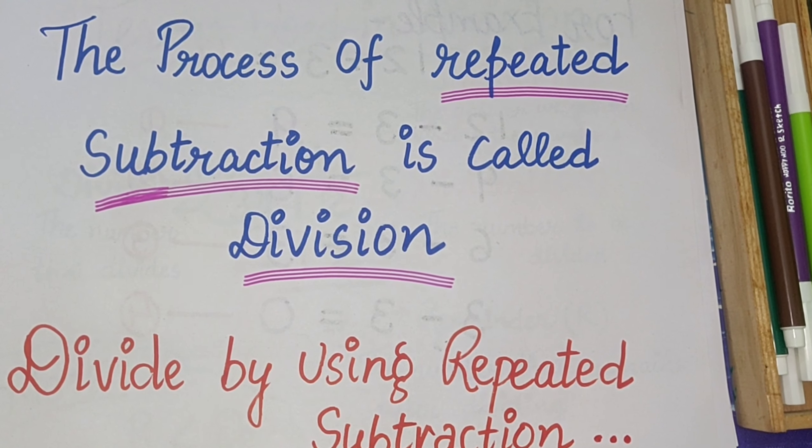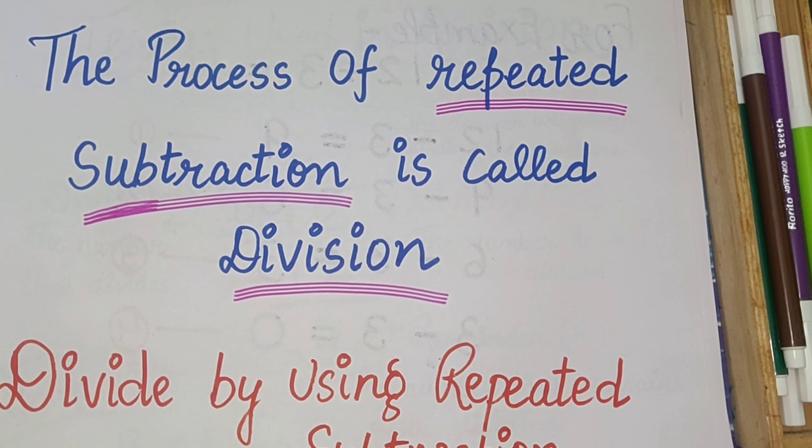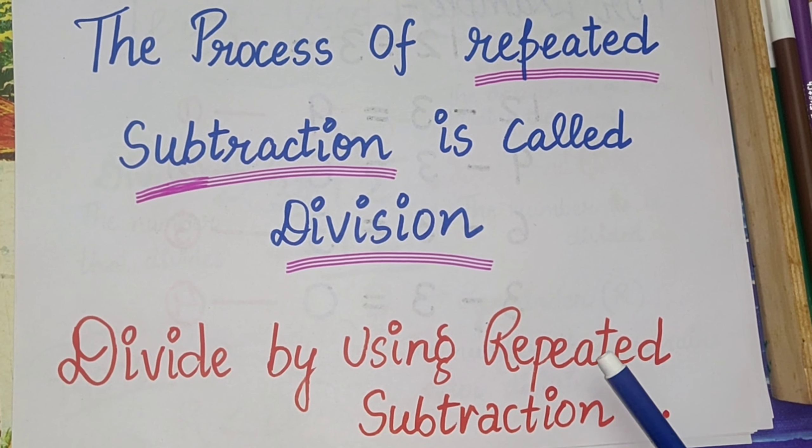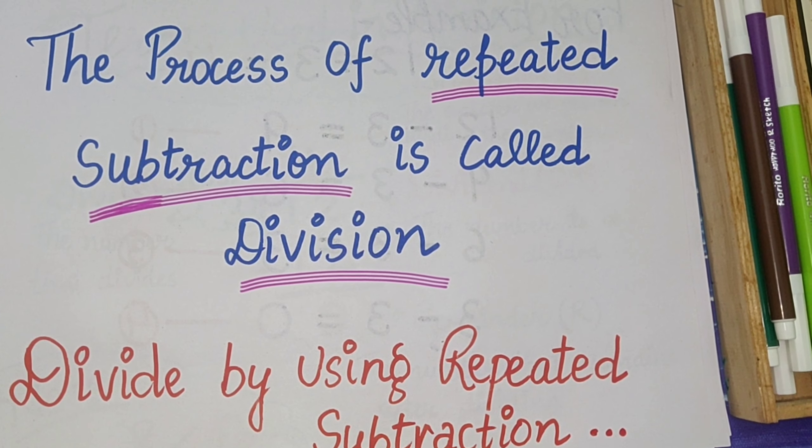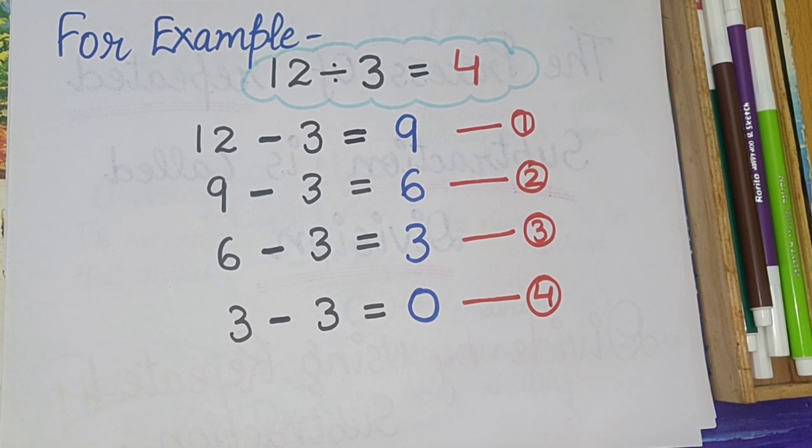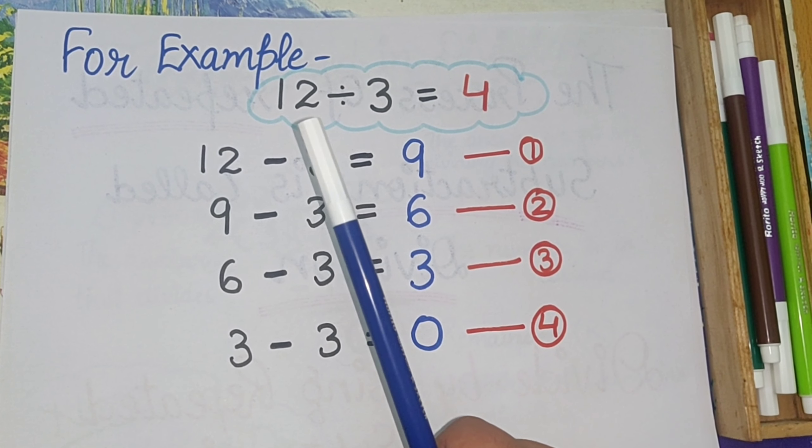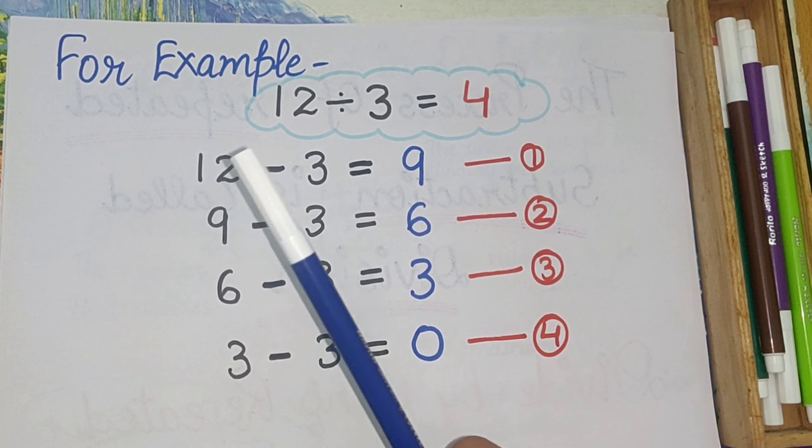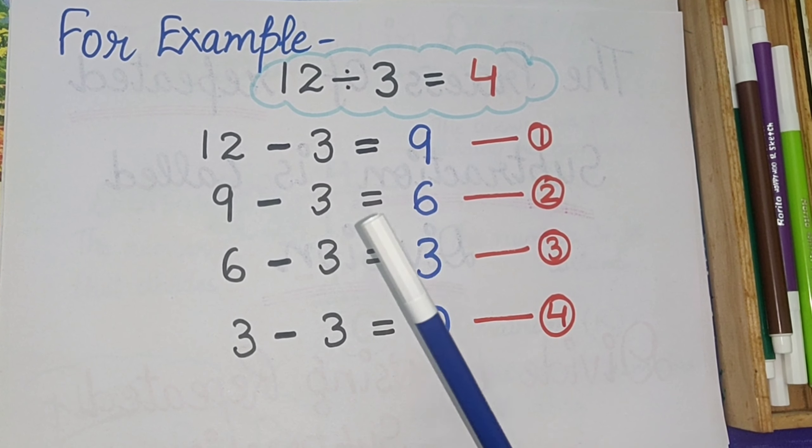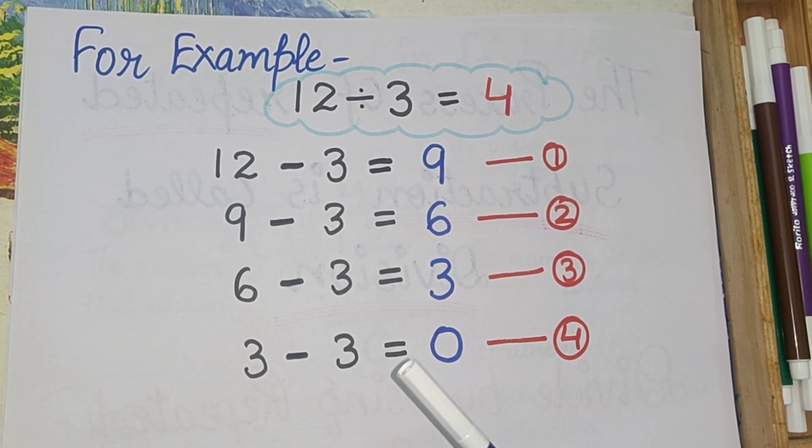Now we are going to divide by using repeated subtraction. Here you can see that I have taken one example. In this we are going to divide this number using repeated subtraction. We will simply write this number 12 and we will subtract 3 from it and we will get 9. Then 9 minus 3 equals 6, 6 minus 3 equals 3, then 3 minus 3 equals 0.